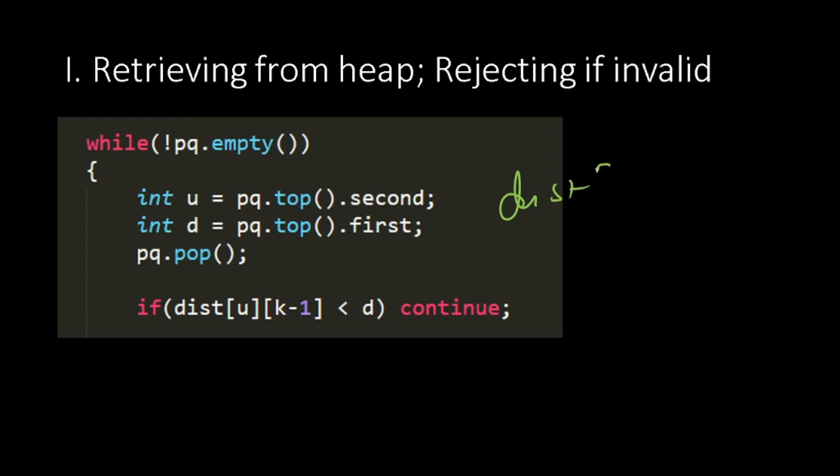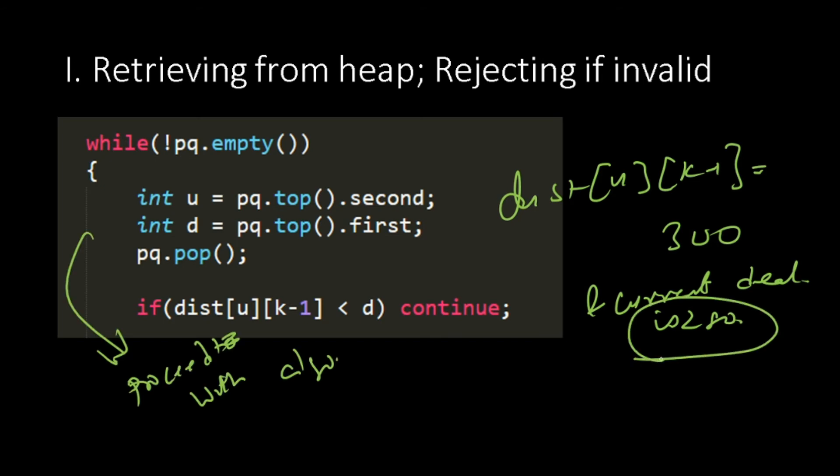If distance[u][k-1], that is equivalent to $300 and current deal is $280, this deal would have been already entered into a distance vector. Whenever something goes into the heap, whenever something goes into the heap, an entry in the distance vector would have been made.